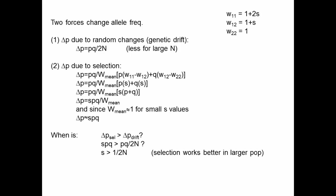In the previous video, we saw that neutral alleles and advantageous alleles fixed with different probabilities and took different amounts of time. That's because there are in fact two forces changing allele frequencies over time: changes due to random factors — that's genetic drift — and changes due to selection, which we looked at for the advantageous alleles.